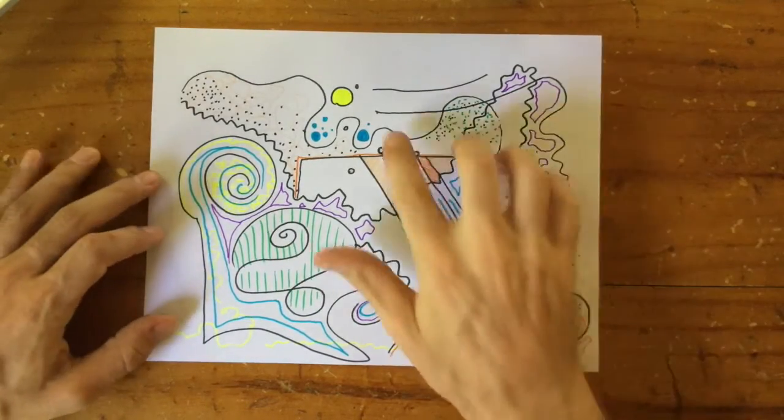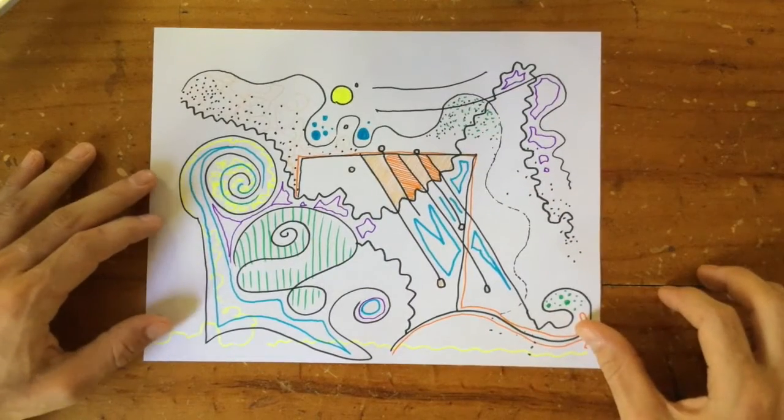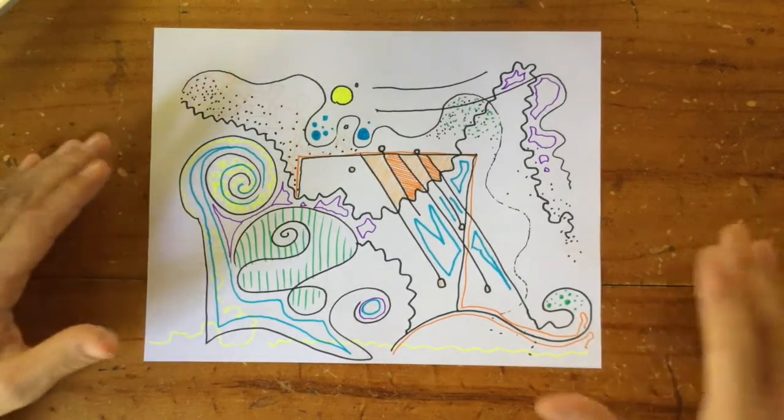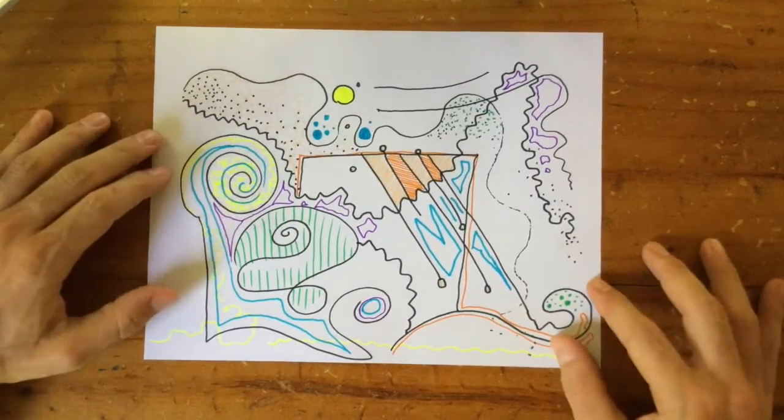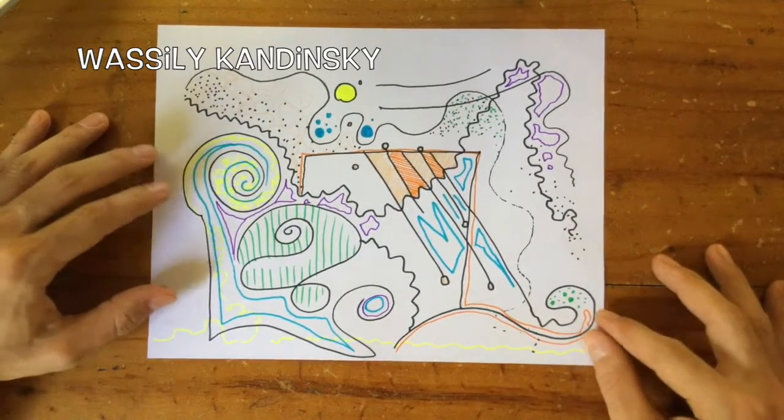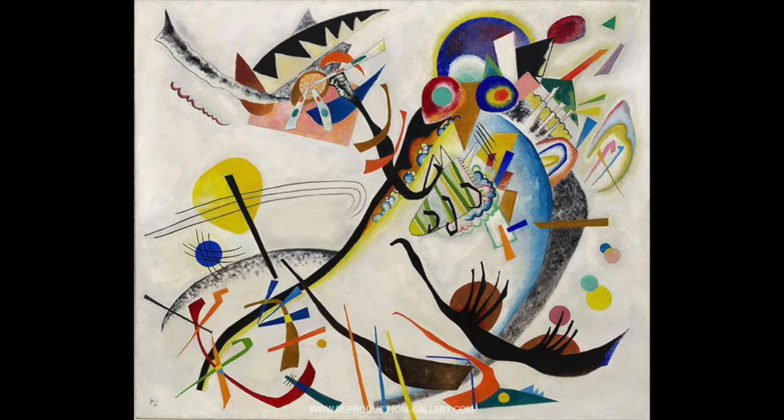One famous artist from the 20th century, more or less a hundred years ago he was alive and painting, was a Russian painter called Vasily Kandinsky. And he made art that was like this, that was responding to sound. He made some really interesting abstract colorful paintings.